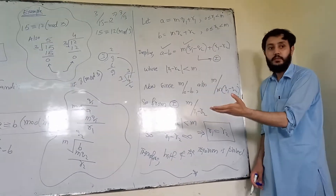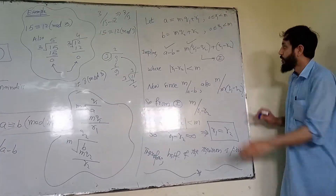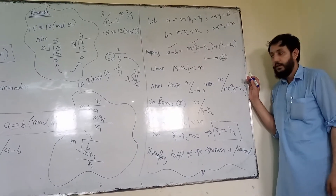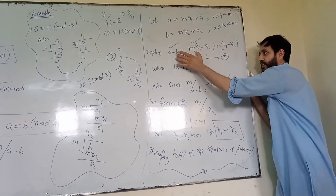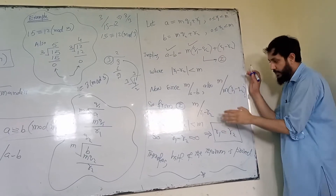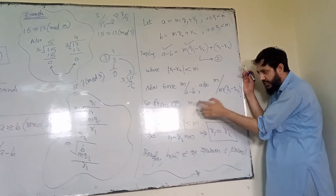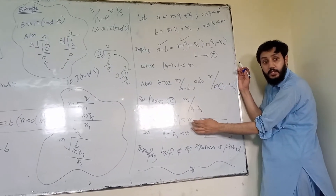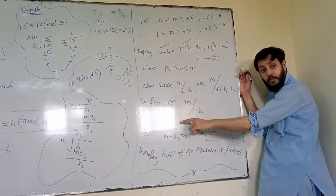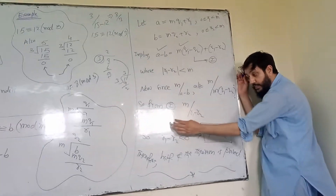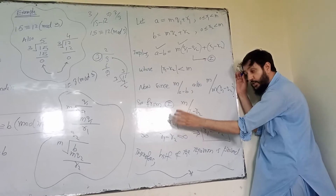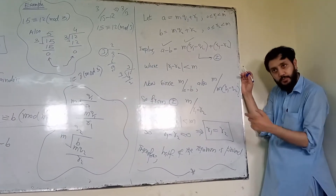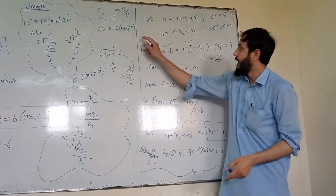By the linear combination argument, M divides R1 minus R2. But the absolute value of R1 minus R2 is less than M. If M divides this quantity and the absolute value is less than M — as an integer — the only possibility is that it must be zero.